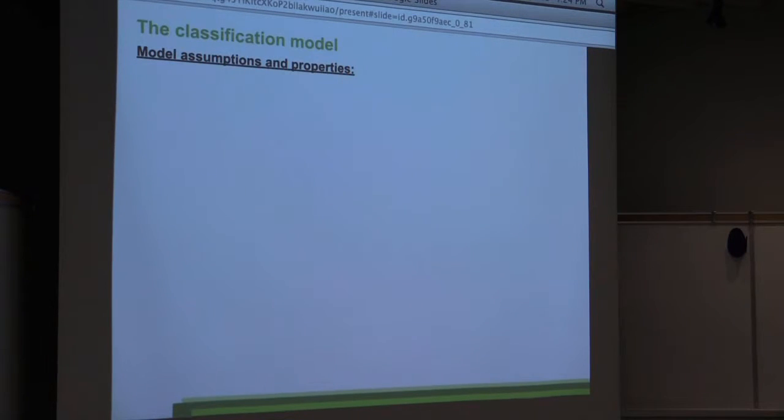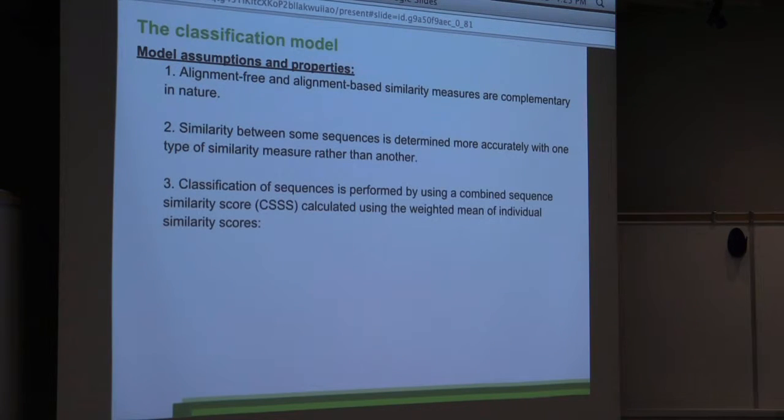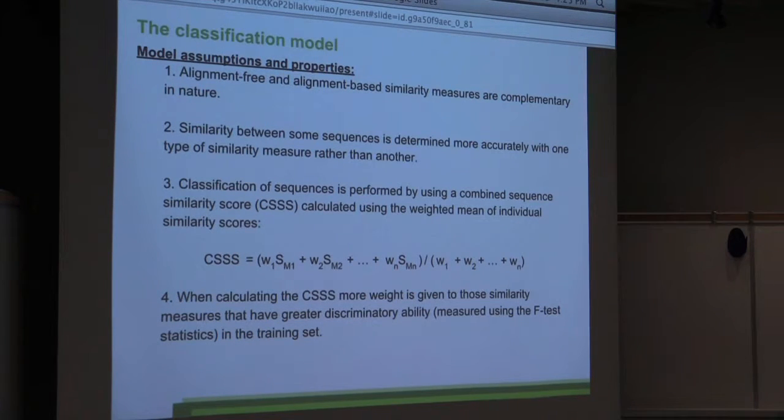So the classification model, we have some assumptions and certain properties. First of all, alignment-free and alignment-based similarity measures are complementary in nature. Some would be better at classifying certain types of sequences than others. So you have to have a model that basically chooses which similarity measure you would use for classifying a particular sequence. This is done by, we are proposing a combined sequence similarity score which is basically a weighted mean of individual similarity scores. This is how it looks like. It's a simple weighted mean, but the weights are basically determined by using F-test statistics, which reflects the discriminatory ability of each similarity measure to basically separate classes in the training set.